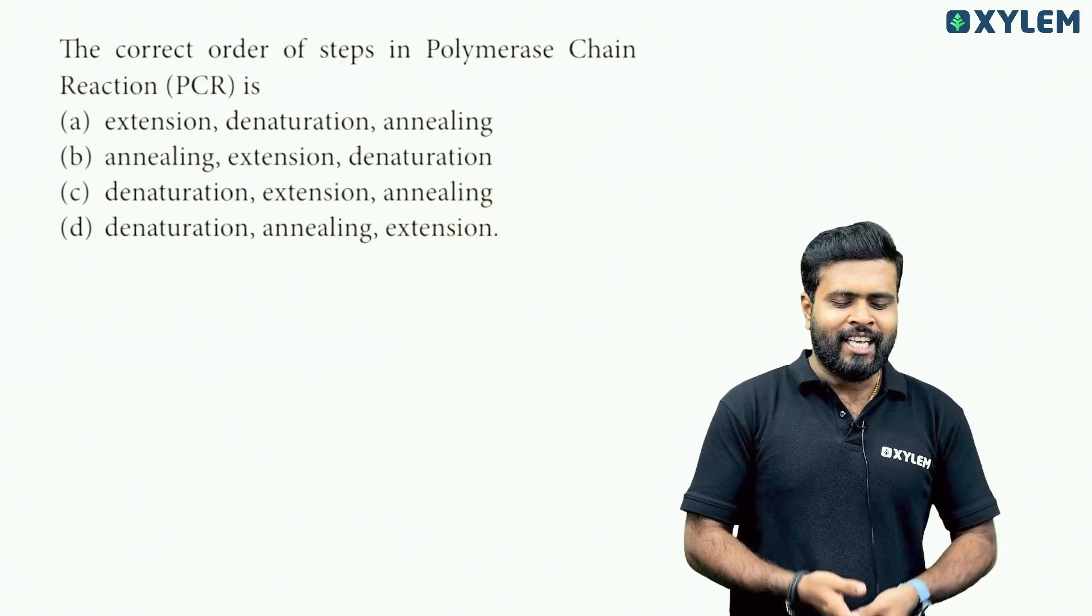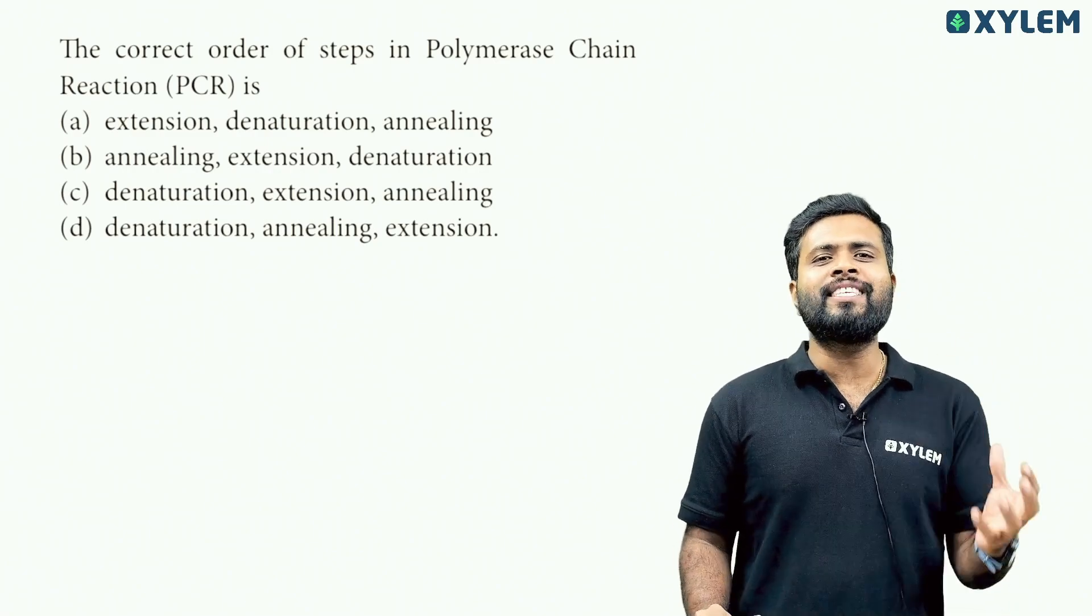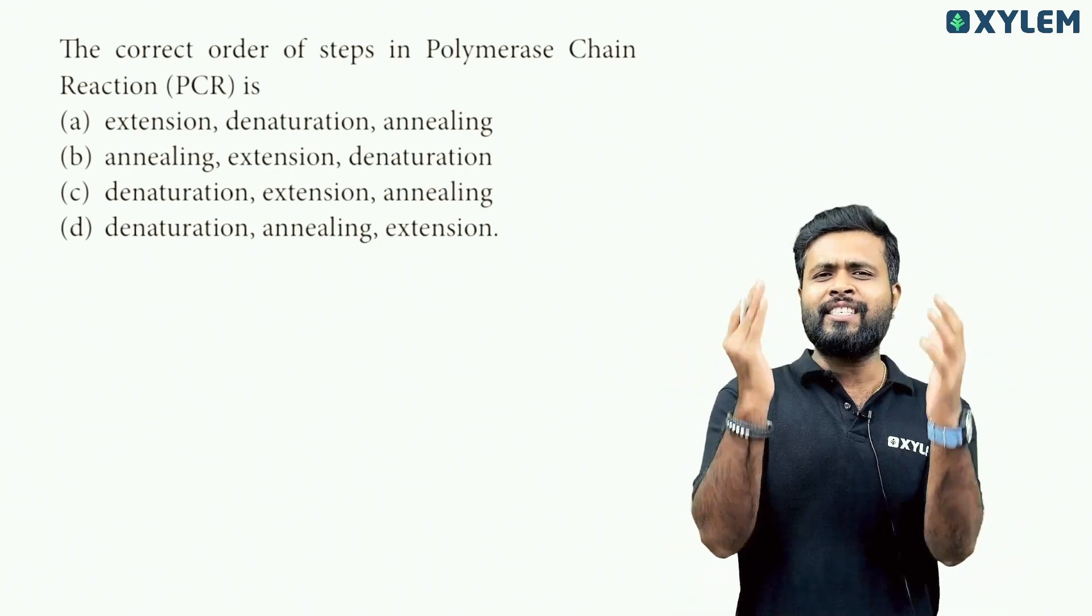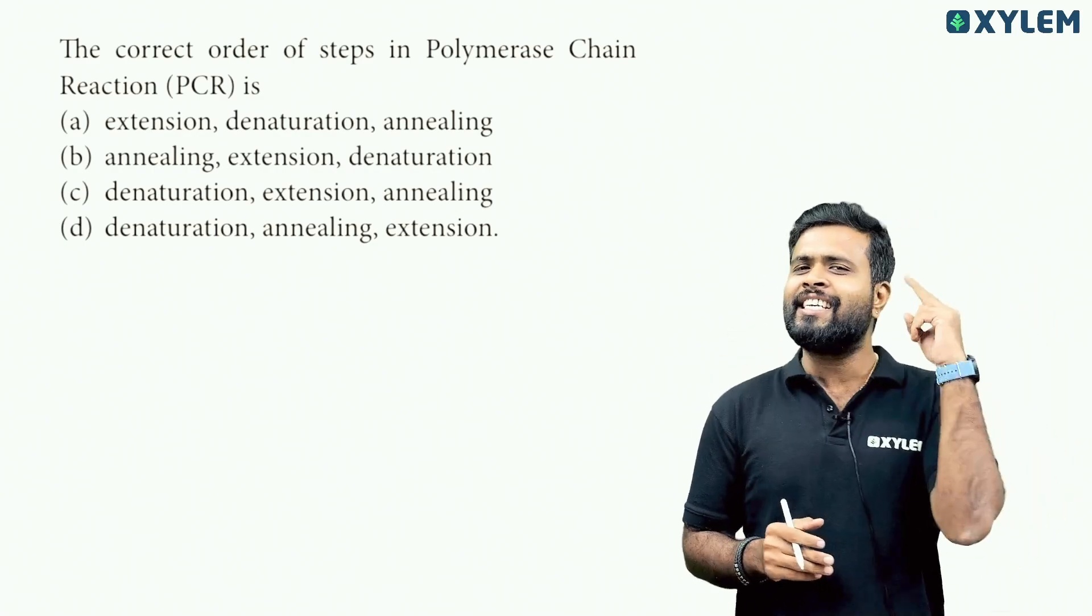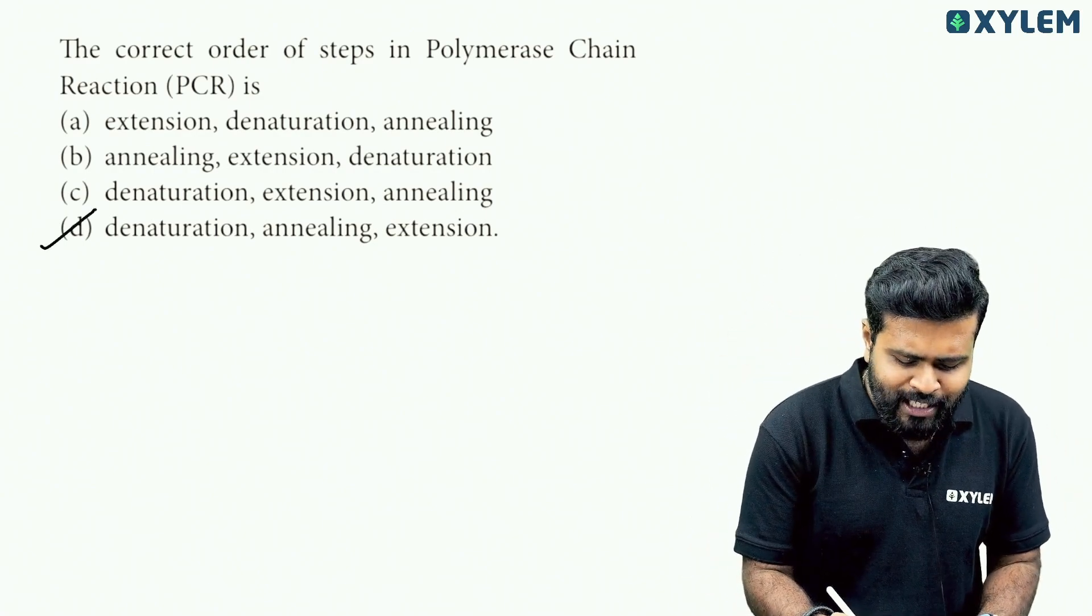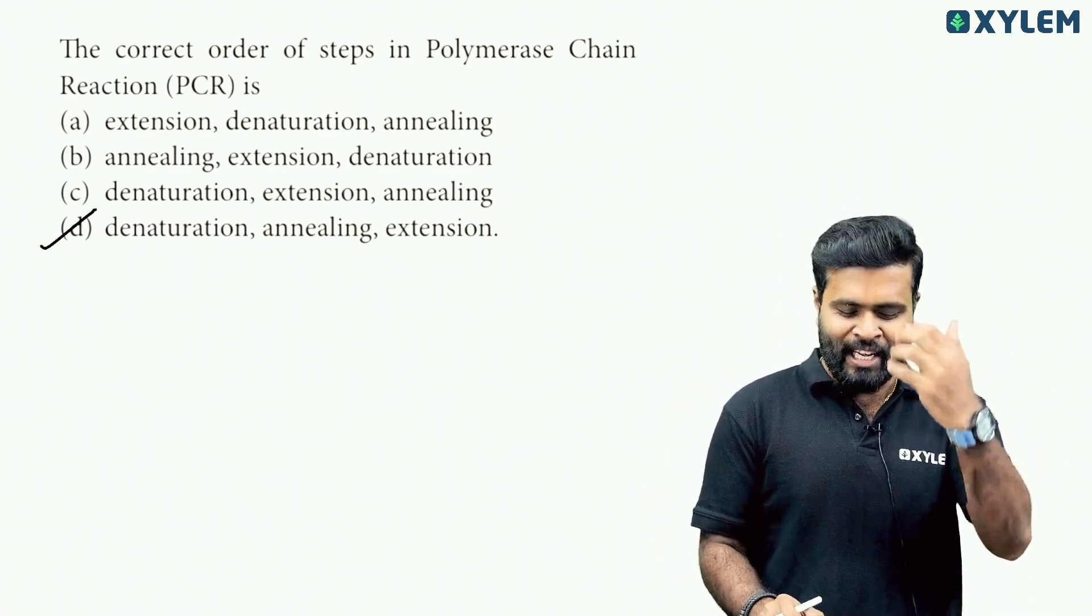So here is the first question. The correct order of steps in polymerase chain reaction is: PCR steps in order. First step is denaturation, second step is annealing, and the last step is extension. So option D - denaturation, annealing, and extension is the right answer.